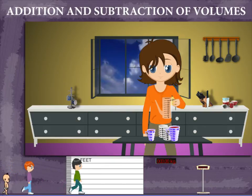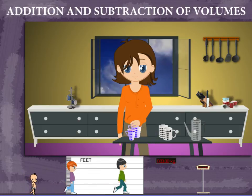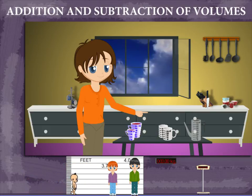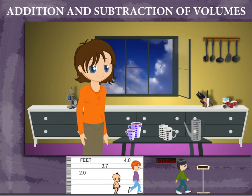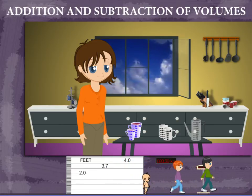She pours the remaining juice in 200 ml cup. Both get filled. Sisley explains 500 ml minus 300 ml gives 200 ml.